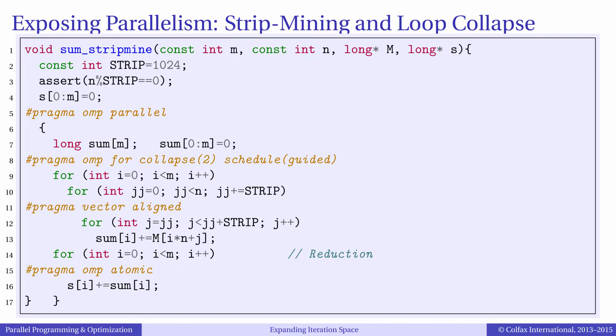To make this loop collapse possible, we had to strip mine the loop in j and change the thread private container from a scalar called sum to an array called sum and implement reduction at the end of the parallel region.